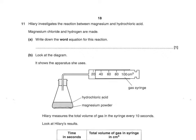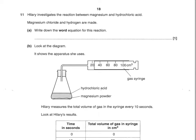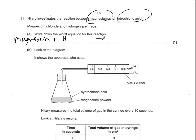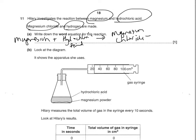Hillary investigates the reaction between magnesium and hydrochloric acid. Magnesium chloride and hydrogen are made. Write the word equation for this reaction. First draw your arrow, then write the reactants on the left — magnesium plus hydrochloric acid — and on the right-hand side write what's made: magnesium chloride plus hydrogen. Make sure you put those plus signs in, otherwise you won't get the mark.